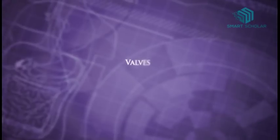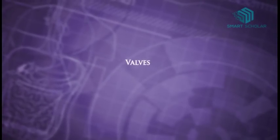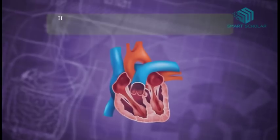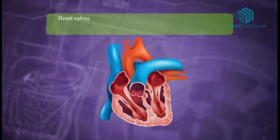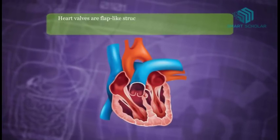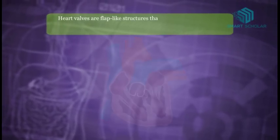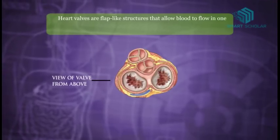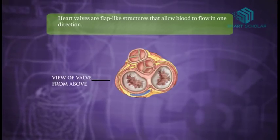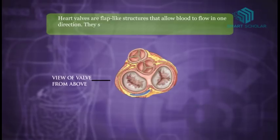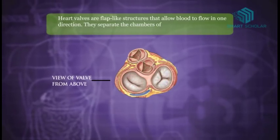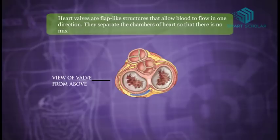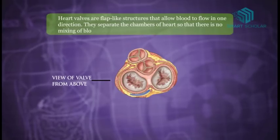Let's get to know something about valves. Heart valves are flap-like structures that allow blood to flow in one direction. They separate the chambers of the heart so that there is no mixing of blood.